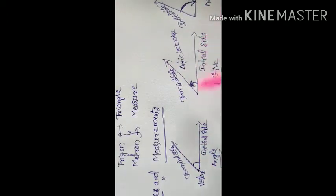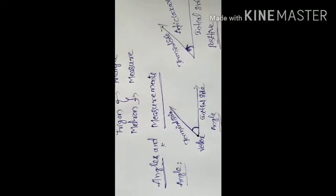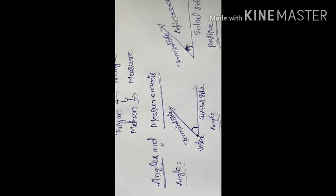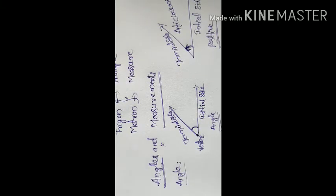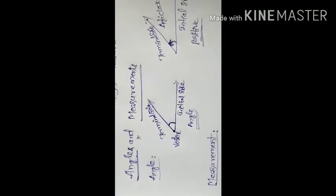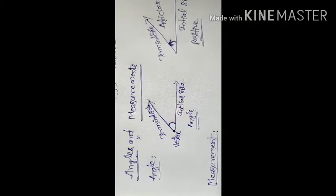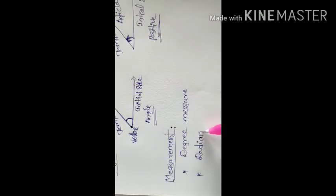This is about angles. Now let's see the measurement of angle. Generally, you can measure angles in two ways: one is degree measure and another one is radian measure.